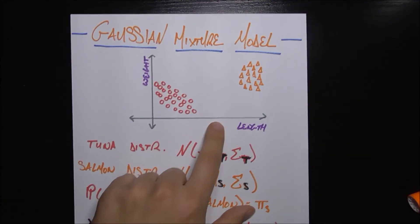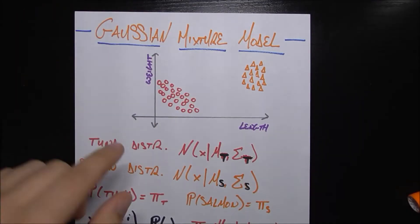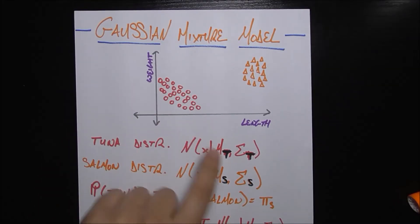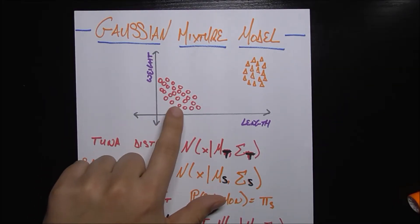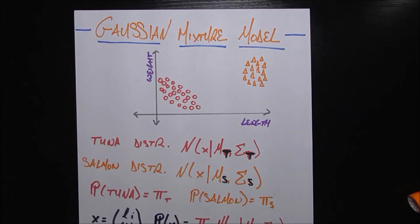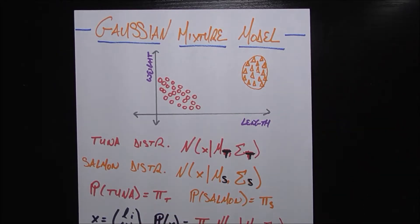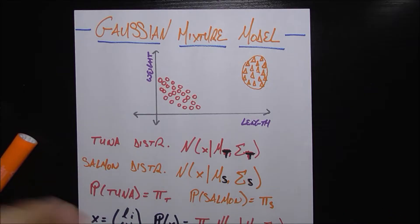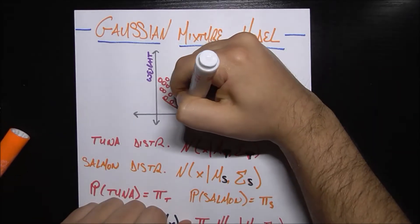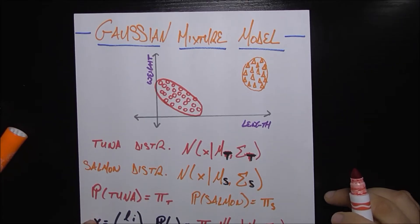In this example, all these orange triangles are salmon — they have high length and high weight — and these red circles are tuna. They have low length and low weight, but there's something more going on. They seem to be in a certain shape. The salmon seem more or less circular, maybe a little elongated, and the tuna seem to be more elongated and oval, more kind of diagonal. There seems to be something more going on than just a link between the length and the weight.